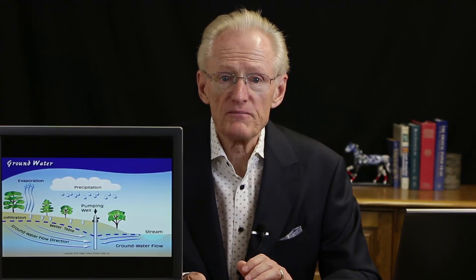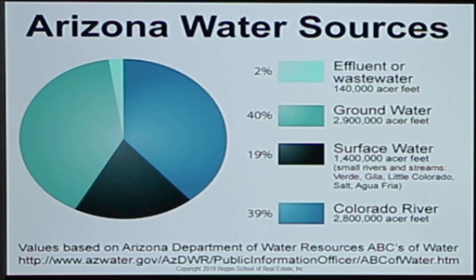What are the sources of water overall here in Arizona? You can see with this chart: effluent, which is treated sewer water, is only about 2%. Groundwater composes 40% of the water sources here in Arizona. Surface water is about 19%. And then the Colorado River, which is of course surface water, supplies the other 39%. We're going to talk about the Colorado River and the CAP, the Central Arizona Project, in just a couple of minutes.